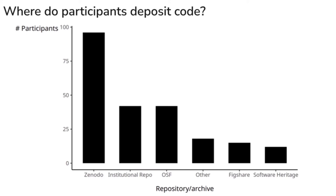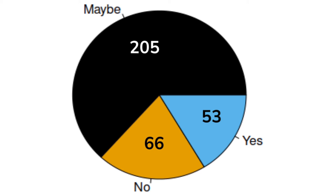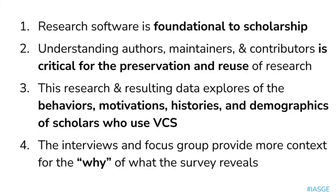Outside Zenodo, we see Figshare and Software Heritage providing valuable efforts in this space. When asked whether scholars want a GitHub specifically for academics, the majority said maybe, for various reasons. Some only use Git and GitHub a few times a year; some said no because they want to be integrated into software developers' workflows; and some said yes, excited for something specially made for them. In culmination: research software is foundational to scholarship; understanding authors, maintainers, and contributors is critical for preservation and reuse; and this research explores the behaviors, motivations, histories, and demographics of scholars who use version control systems.